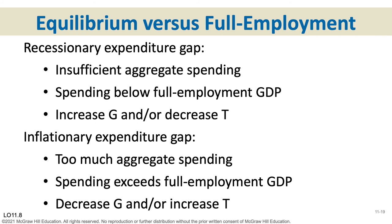We use all this information to analyze recessionary and inflationary gaps. If spending is less than the equilibrium GDP needed to reach full employment, we need spending to increase — that's a recessionary gap. If spending is more than needed for the full employment equilibrium level of GDP, we need to decrease spending. The government can assist: for a recessionary gap, increase government spending, decrease taxes, or a combination. An inflationary gap means too much spending, so decrease government spending or increase taxes to decrease consumption spending.